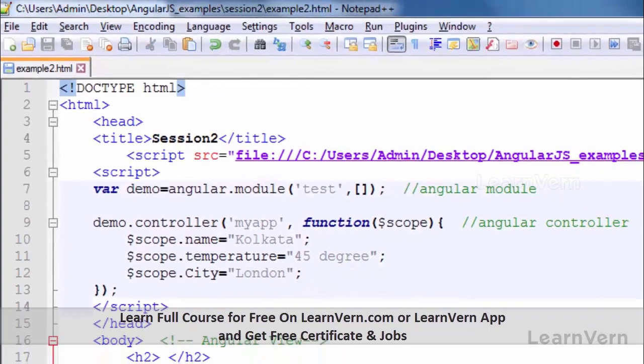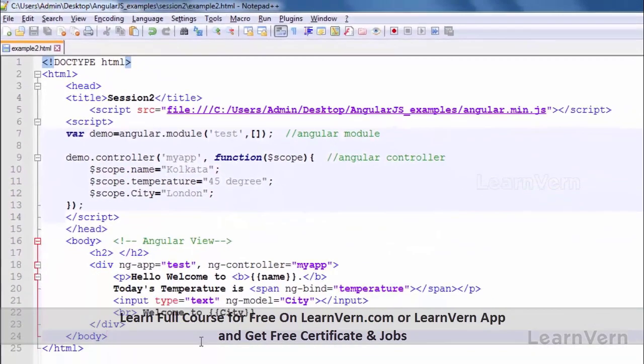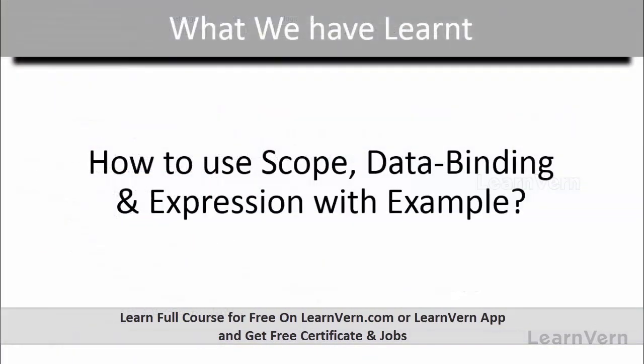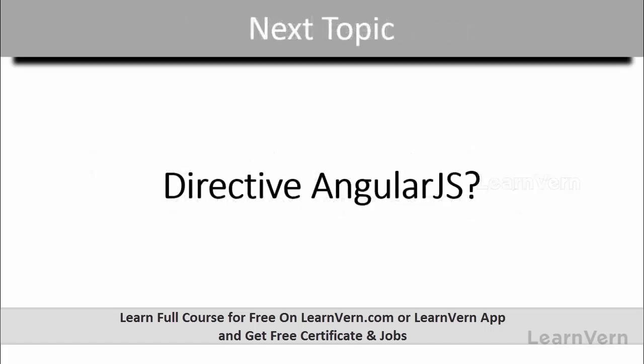So friends, we have learned what is scope, what is data binding, and what are expressions in AngularJS, and we have seen examples of scope and data binding with expressions. In our next session we will see what is a directive and what are the types of directives in AngularJS.